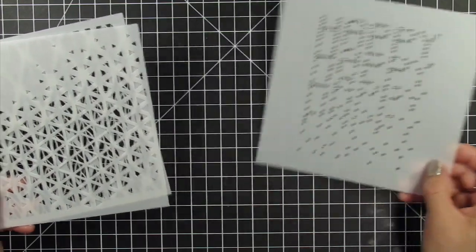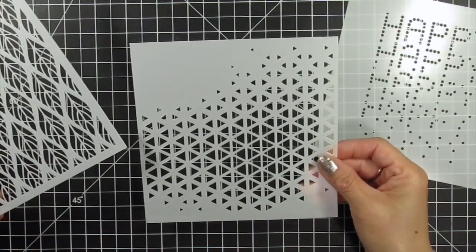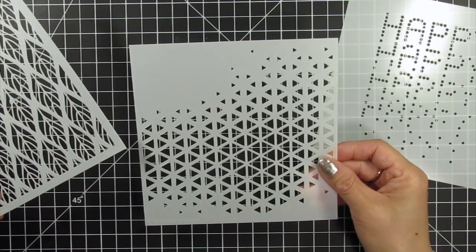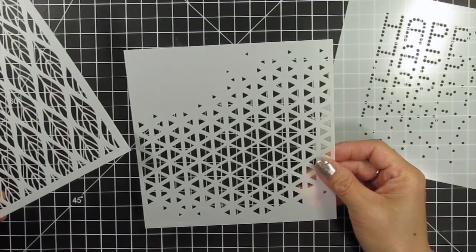The second stencil I'll be using is the Play the Angle stencil, and I love the uniqueness of this design. I seem to lean towards asymmetrical designs, and I love that open space where you can fit an image or sentiment.